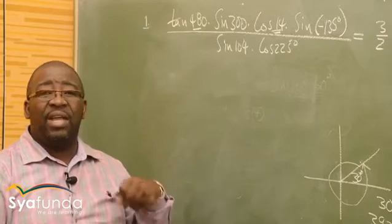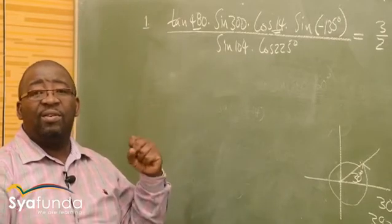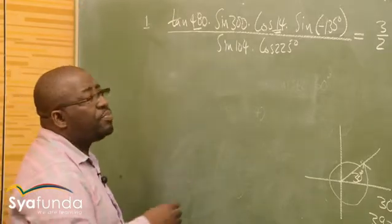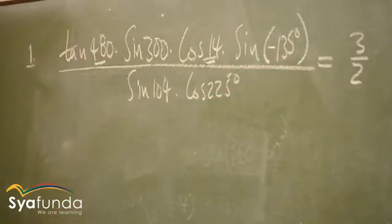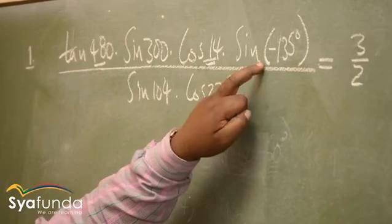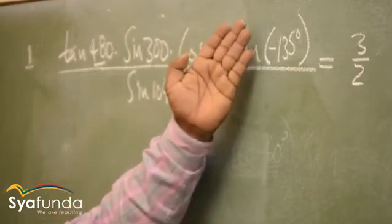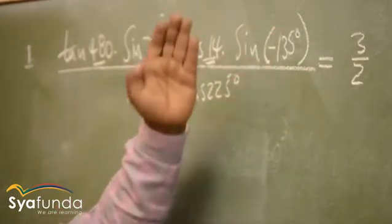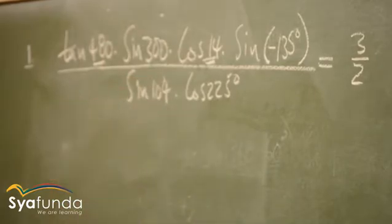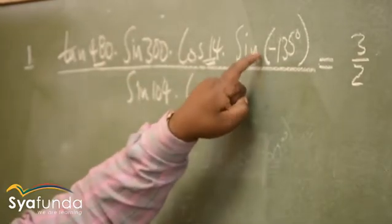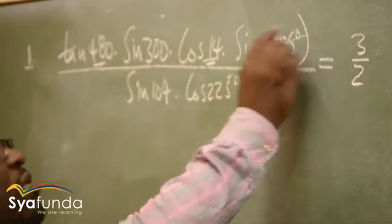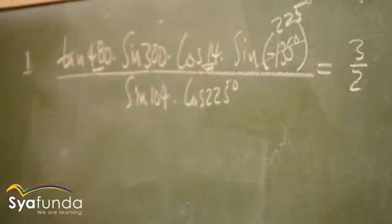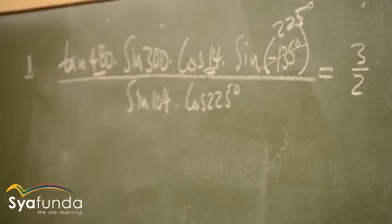When you see angles like 8, 12, 14, 19 that you cannot find without a calculator, take note. For the negative angle −135: whenever you see a negative angle, make sure that you add 360 to it so that the angle becomes positive. So 360 plus (−135) gives us 225. This is now a positive angle between 0 and 360, so I am happy with that.